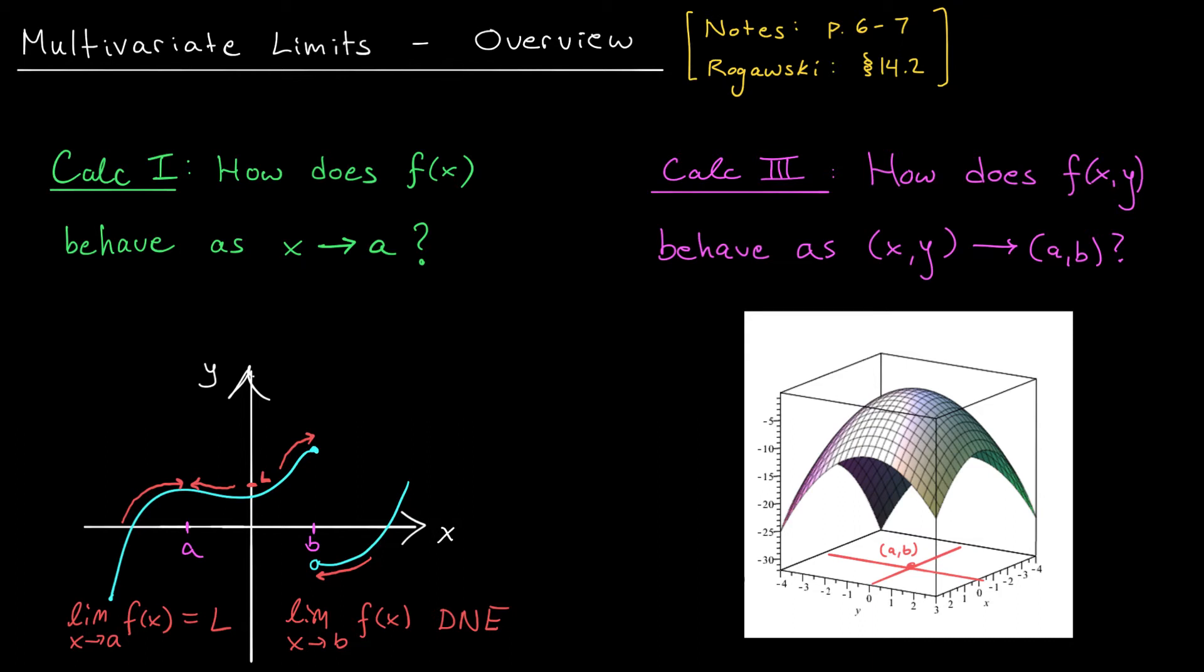For example, we could approach (a,b) along this red line here, the line x equals 0. When we do this, the function appears to be approaching some value up here. Alternatively, however, we could have approached (a,b) using this red line, the line y equals 0. When we do this, it appears that the function is still approaching that same value up here.